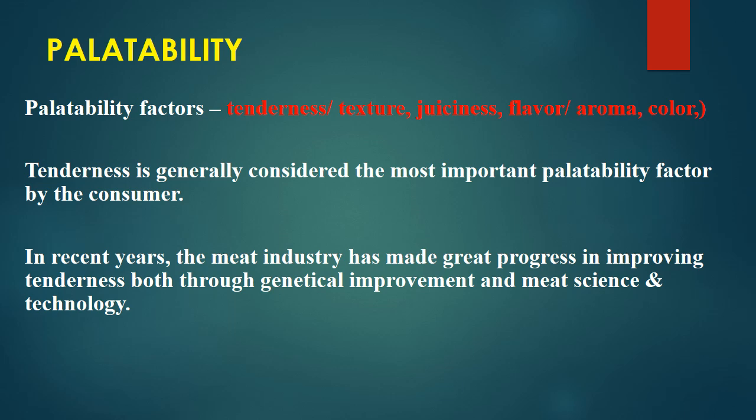Before talking about aging or tenderness, we need to understand the palatability characteristics of meat, sometimes also called eating quality. The most important qualities are tenderness, which also includes texture, then juiciness, then flavor, and sometimes aroma and color. These are the quality aspects we refer to as eating quality or palatability, of which tenderness is the most important factor.